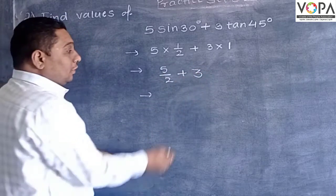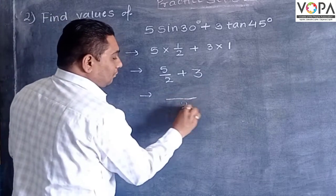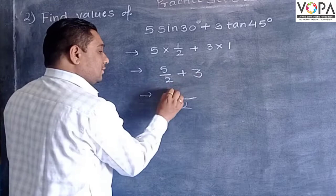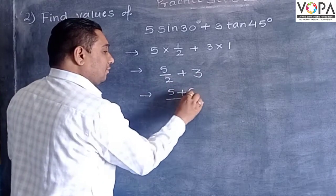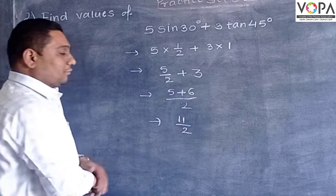To make the denominator equal, here multiply by 2 over 2, that is 3 times 2 is 6. So 5 plus 6 which is equal to 11 upon 2.